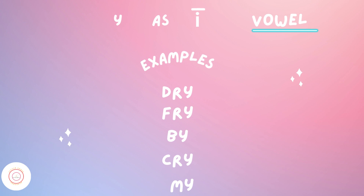In the other three sounds, Y behaves as a vowel. For example, Y says the long I sound at the end of a short word, which means at the end of a word having only one syllable. For example: dry. Dry has only one syllable, so Y is saying I at the end of this short word. Other examples: fry, buy, cry, my.